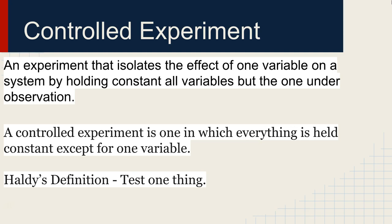So I looked up a couple definitions and put them here for you. The first one is a little bit complicated, but if you look at the last two, those are the ones I want us to focus on. So a controlled experiment is one in which everything is held constant except for one variable. And my definition is that we're just testing one thing.